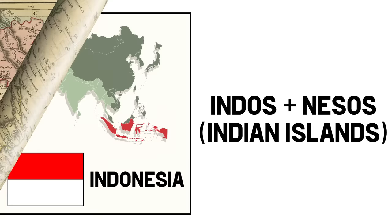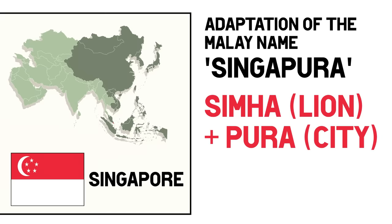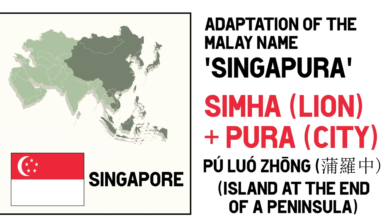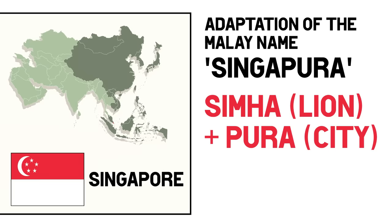Back to the mainland, the small city-state of Singapore. Singapore is an English adaptation of the Malay name Singapura, which was in turn derived from a Sanskrit word meaning lion city — Simha means lion and Pura means city or fortress. An ancient Chinese account from the 3rd century referred to it as Pu Luo Zhong, which would translate to island at the end of the peninsula, an accurate description for its location. Under Japanese occupation it was called Syonan, meaning light of the south, then returning to Singapore when the occupation came to an end.